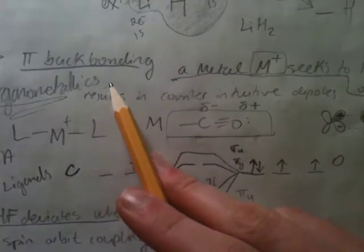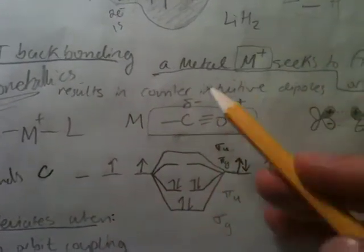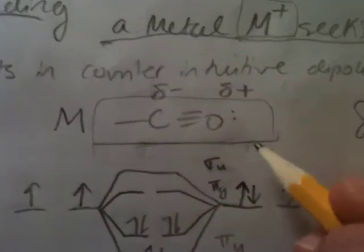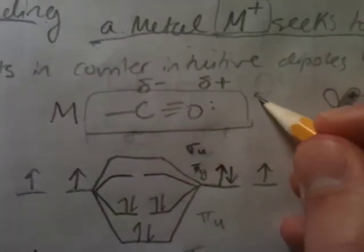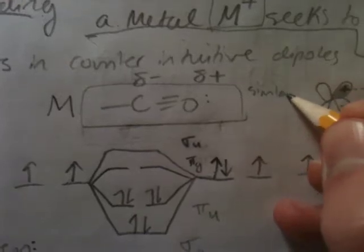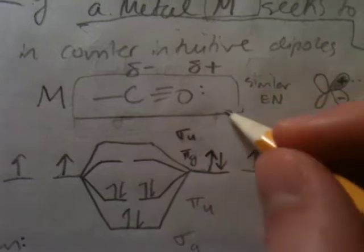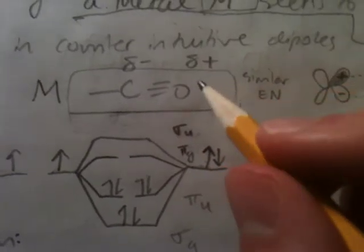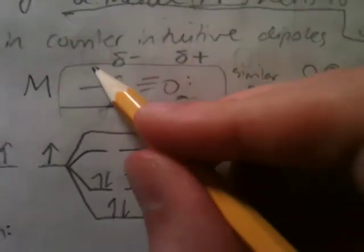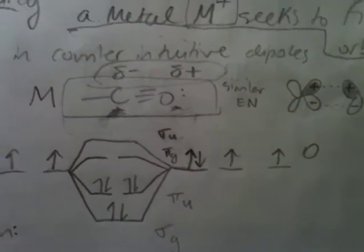Because of pi backbonding, you get a counterintuitive dipole on this ligand. Carbon and oxygen have similar electronegativities, though oxygen is a little more electronegative. So you would think oxygen would get the negative charge and carbon the positive dipole. But this does not happen — what actually happens is you get a negative dipole on carbon and a positive dipole on oxygen. That is pretty crazy, but it makes sense when you draw it out.